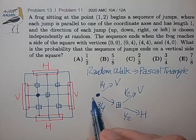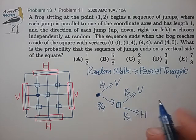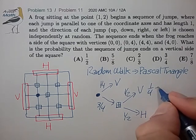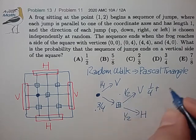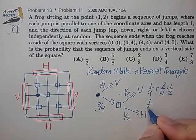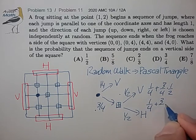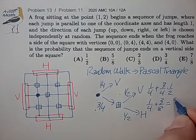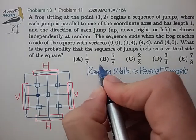And calculating the gross probability of ending up on a vertical, it's one-quarter plus three-quarters times one-half. That's one-quarter plus three-eighths. That's five-eighths for choice B.